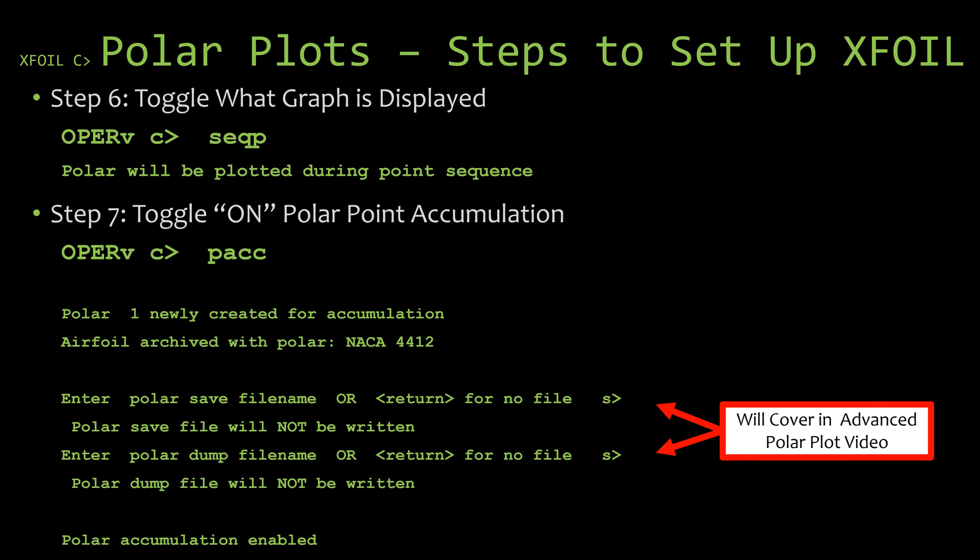The next step would be to toggle what graph is going to be displayed when you run an analysis. Now the default for XFOIL is that when you run an analysis it's going to display the pressure distribution plot, and what we're going to do right here is change what plot XFOIL is going to create when we run an analysis and we do that using the seqp command. If you type that in your command prompt and hit enter, you'll see that it prints out a line to the command prompt that says polar will be plotted during point sequence.